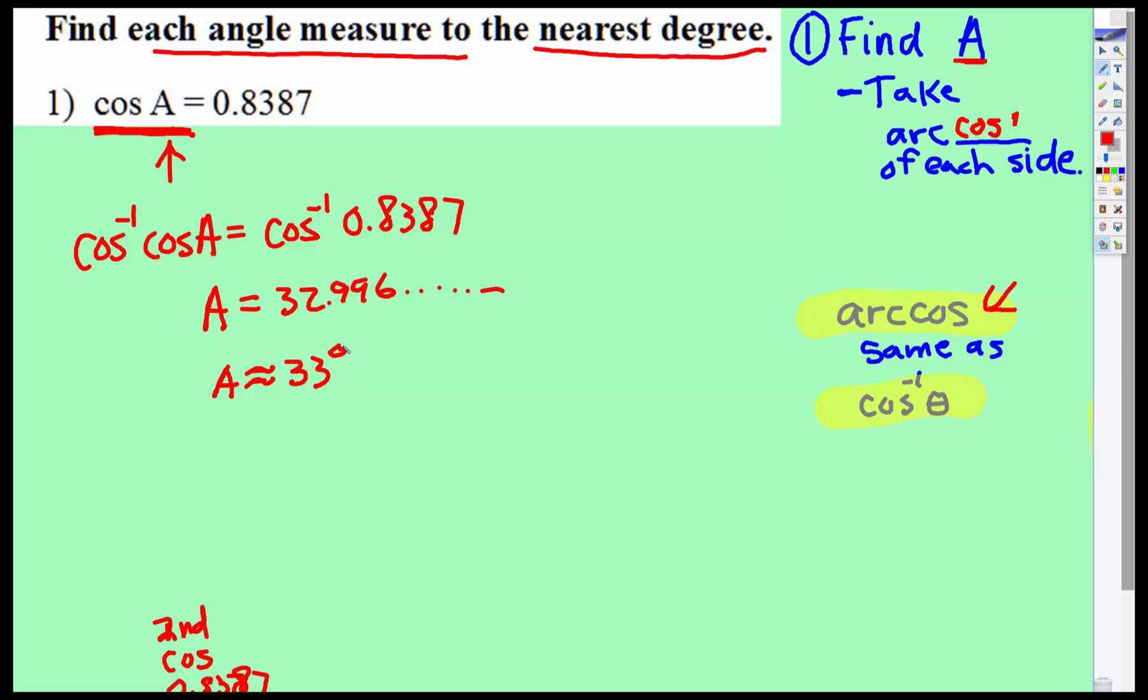That's it. If this was sine or tangent, you'd do the same thing, except you would type second then the sine button, or second then the tangent button.